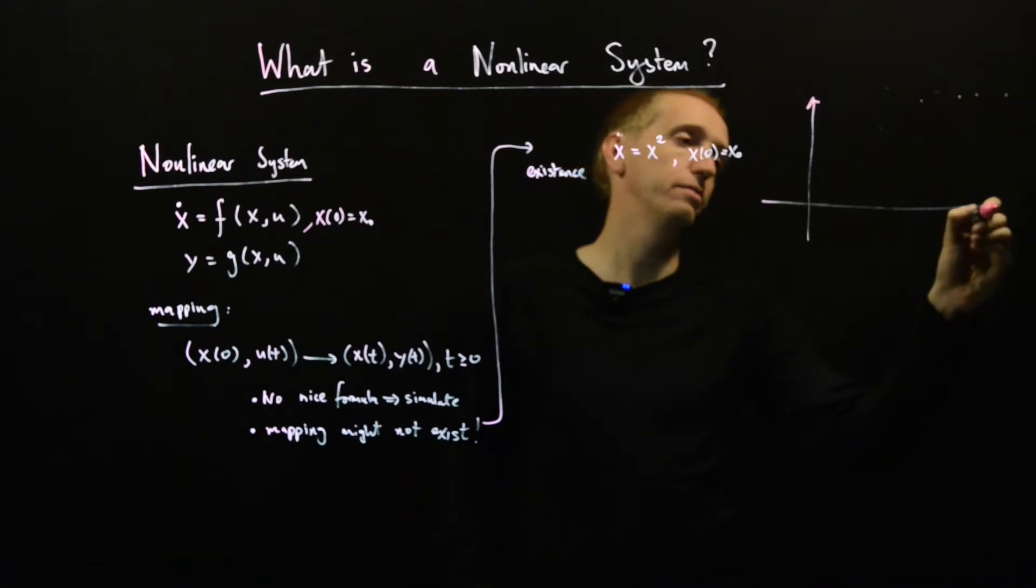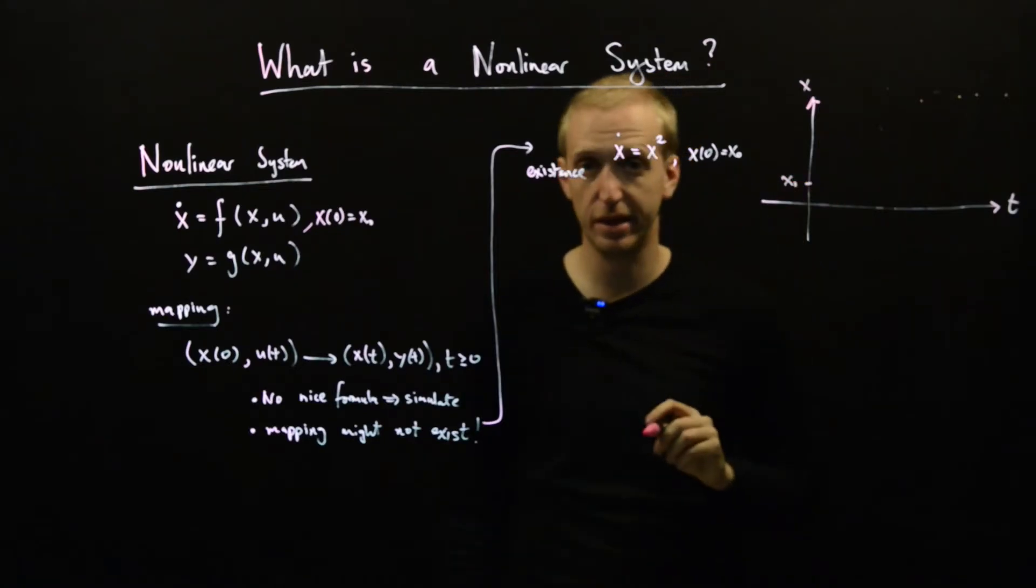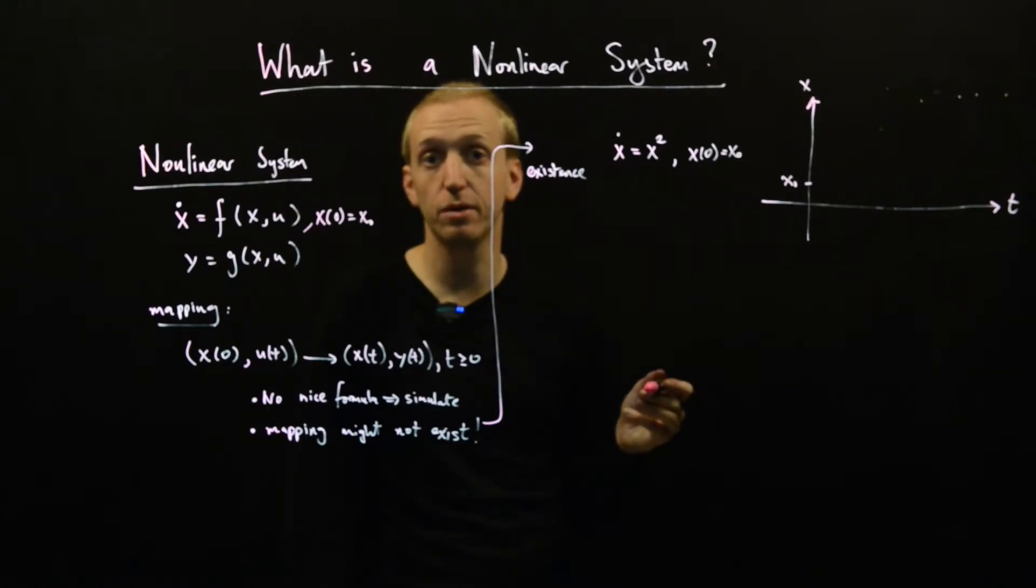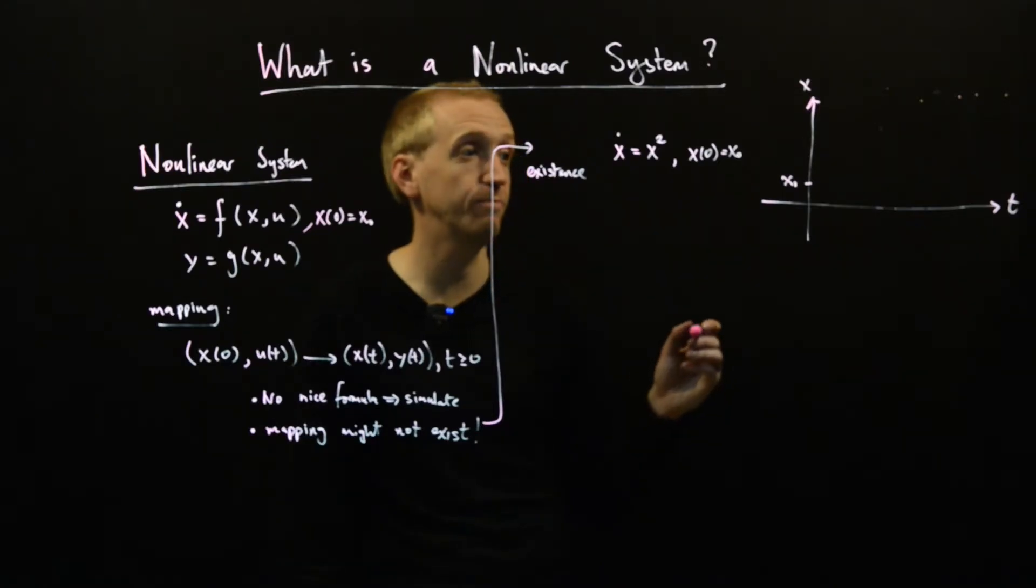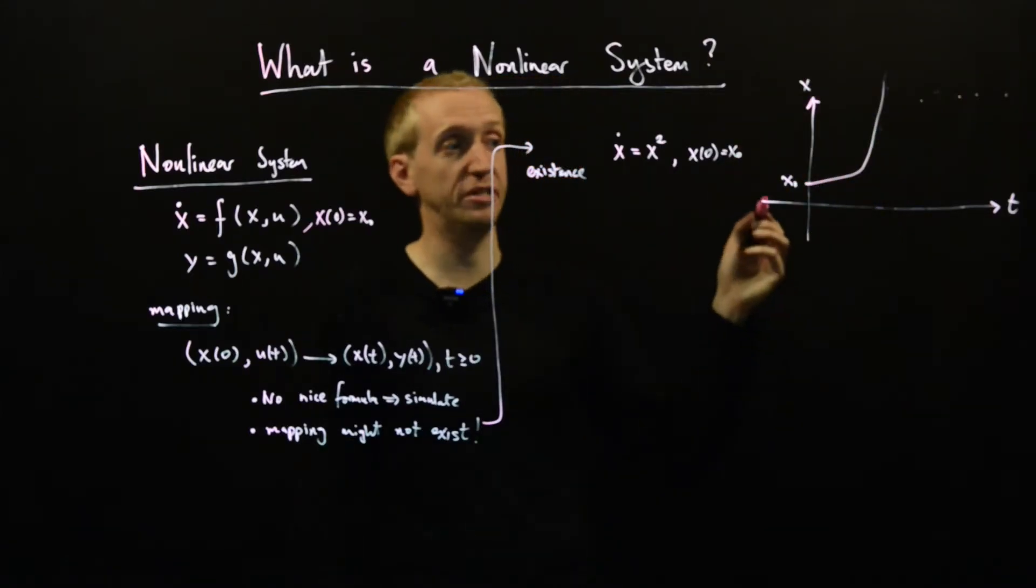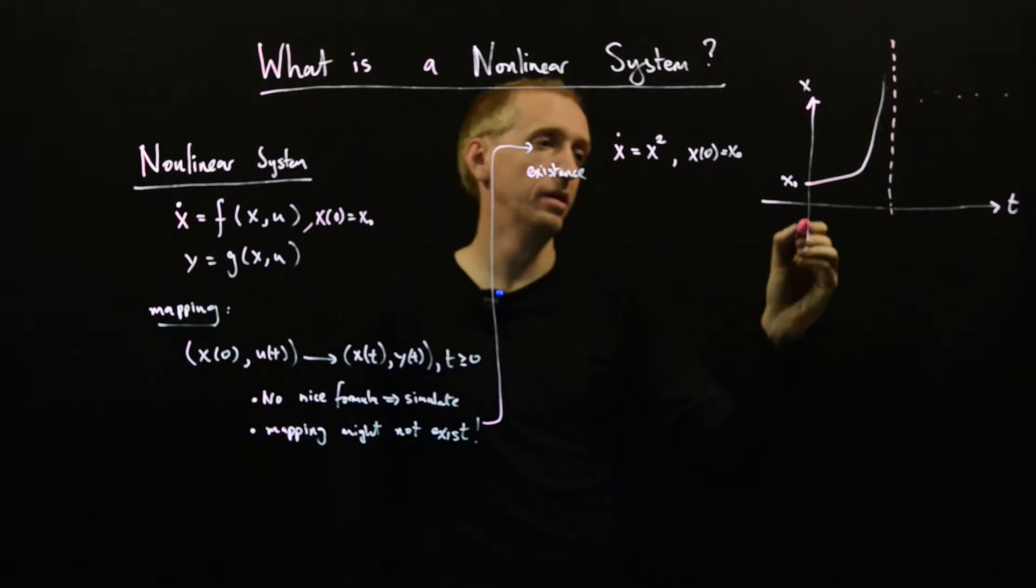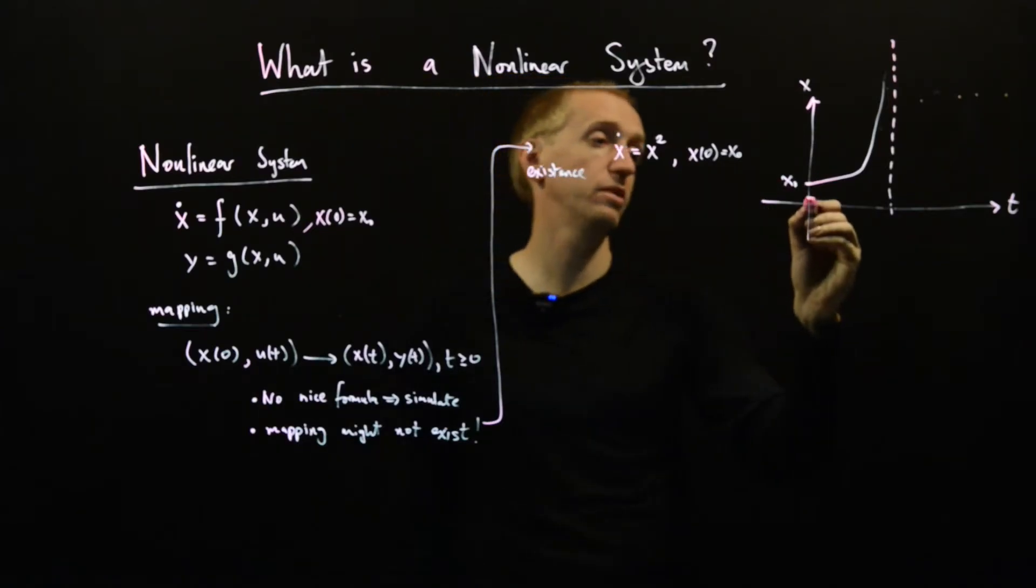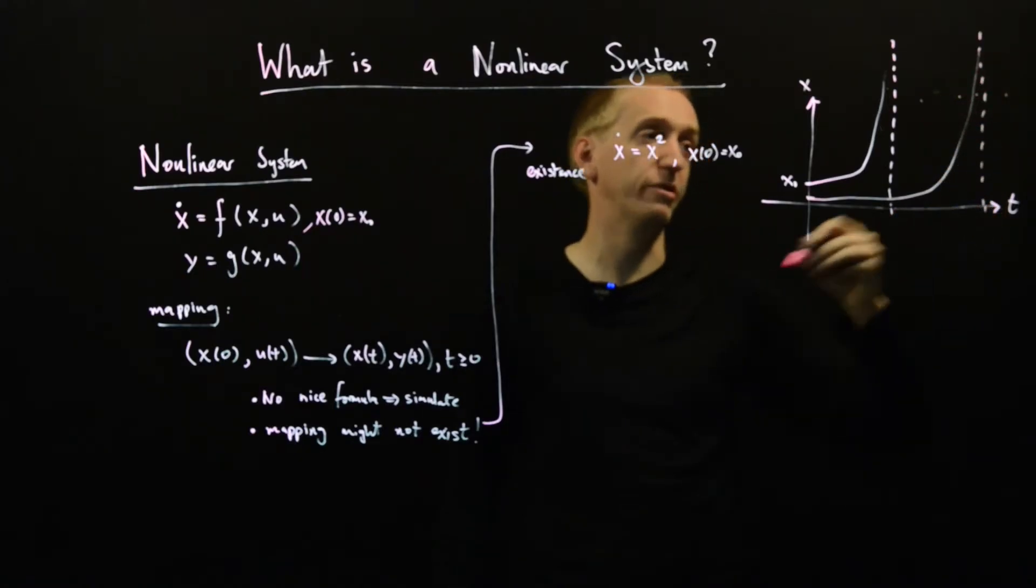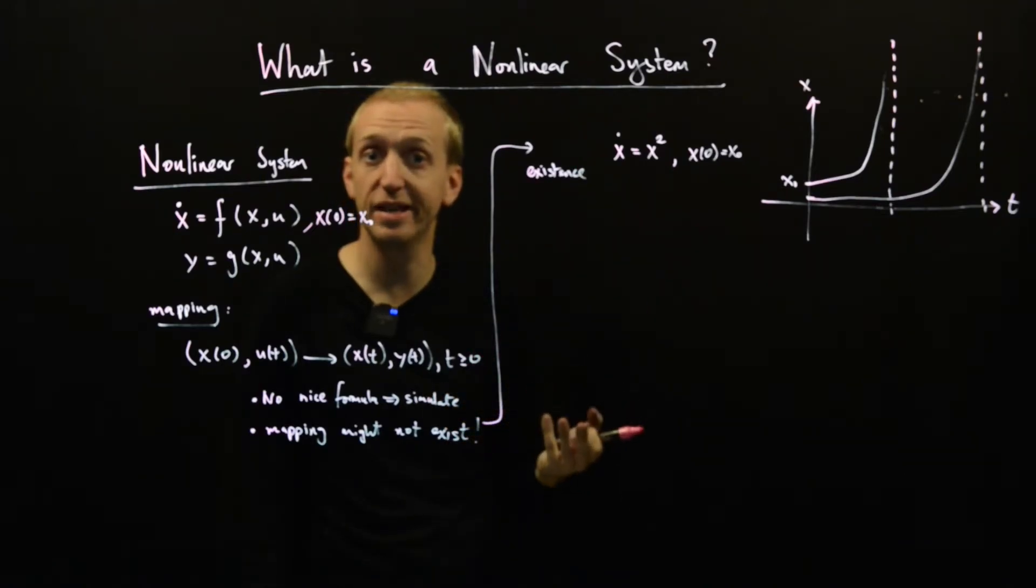Well, depending on the initial condition - so here we've got time here, we've got our value of x, our initial condition is something like this x naught - and the solution will actually demonstrate this phenomenon called finite escape time. So the solution will actually look something like this for this initial condition, and it actually asymptotes up here. And similarly, if I start with a different initial condition, it will go along a little bit longer but eventually it'll shoot off and go to infinity.